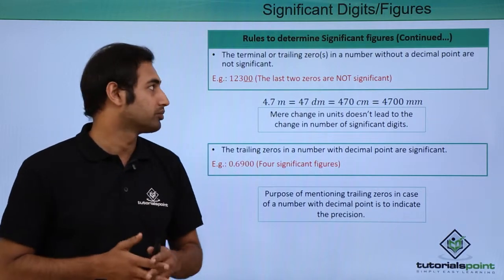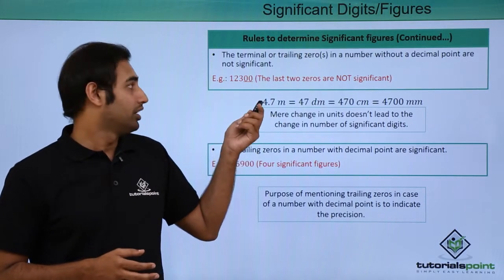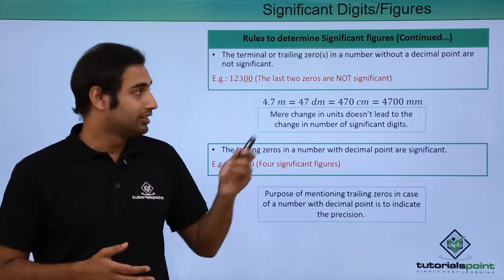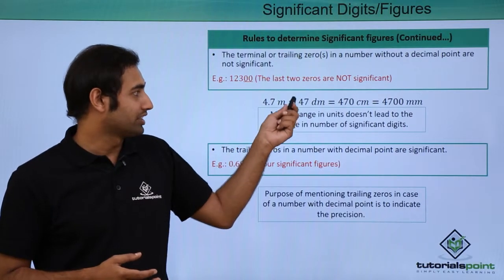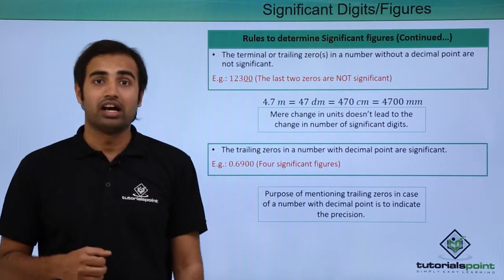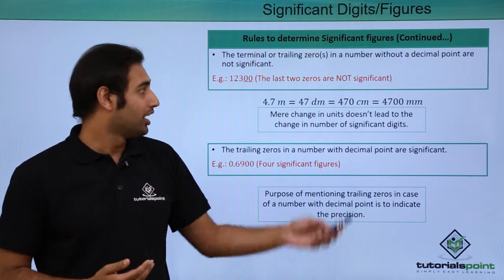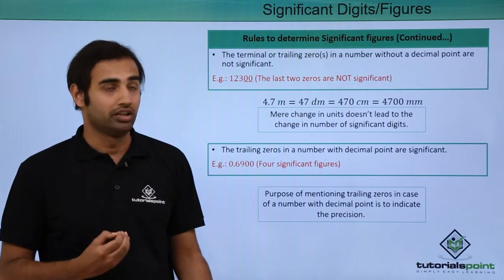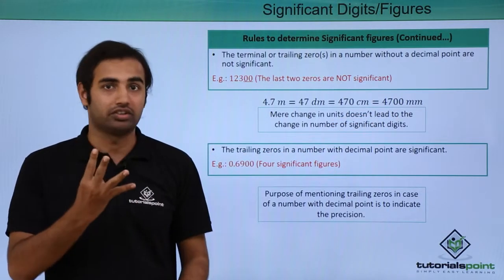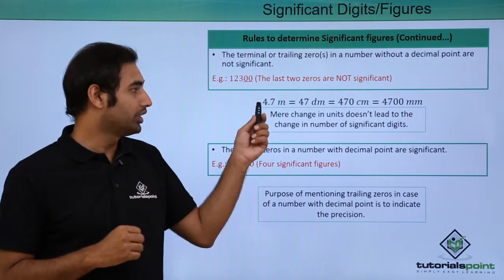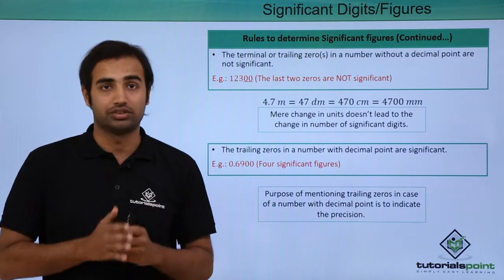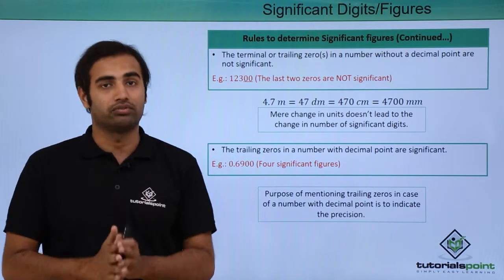That's the most important point you must remember. For example, if I have 4.7 metres, the same thing can be expressed as 47 decimetres, or 470 centimetres, or 4700 millimetres. By merely changing the units, the number of significant digits shall not change. So clearly 4700 millimetres shall not have 4 significant digits — it should still have only 2 significant digits. That's exactly why the trailing zeros rule is defined and important for you to understand.